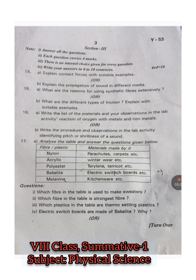Question 15: What are the reasons for using synthetic fibers extensively? Nowadays we are using synthetic fibers instead of natural fibers, so you have to write the reasons why we prefer synthetic fibers. The choice for that question is: What are the different types of frictions? Explain with suitable examples. The four types are static friction, sliding friction, rolling friction, and fluid friction. You have to write all four types with examples.